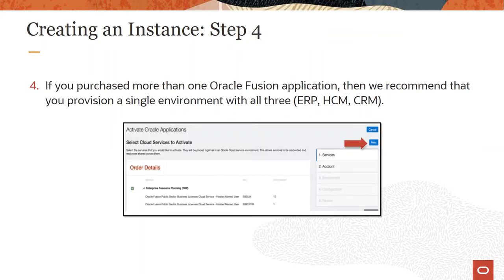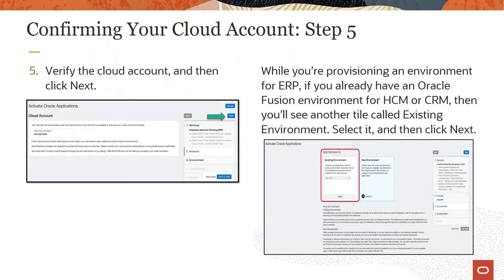If you have subscribed to multiple services, it is recommended that they all are provisioned in a single environment. You'll verify the cloud account. And if you've already provisioned an environment previously and now you're in phase two of your implementation — six months, three months, or a year later — and you want to add ERP to HCM or to your CRM environment, then you'll see a tile called Existing Environments and you'll select it as your destination for whatever you are activating at this time.